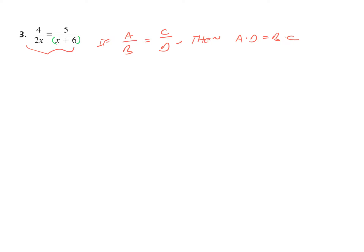Looking at this, we could say that product AD equals 4 times quantity X plus 6, and the product BC would be 5 times 2X. The parentheses on the 2X is optional — it never hurts. From here, depending on what results from the cross-multiplication, that will dictate what to do next.